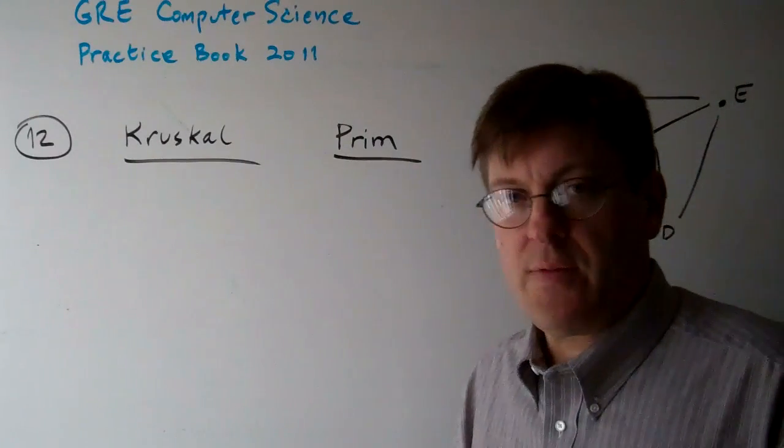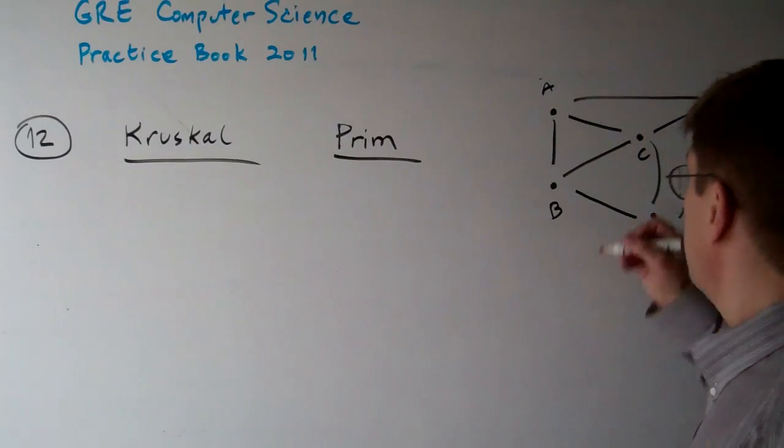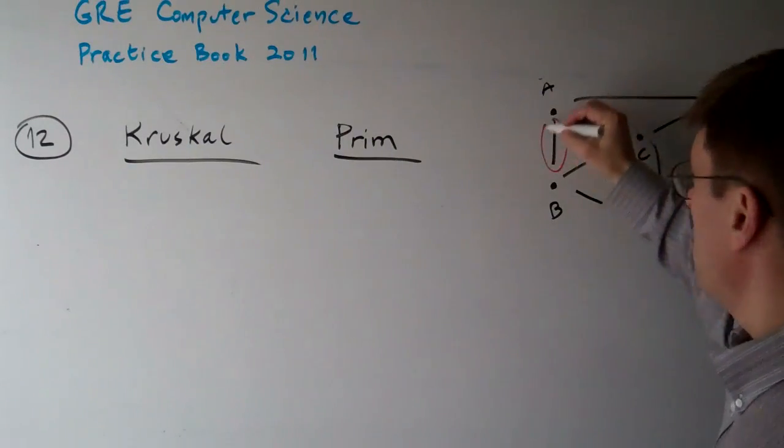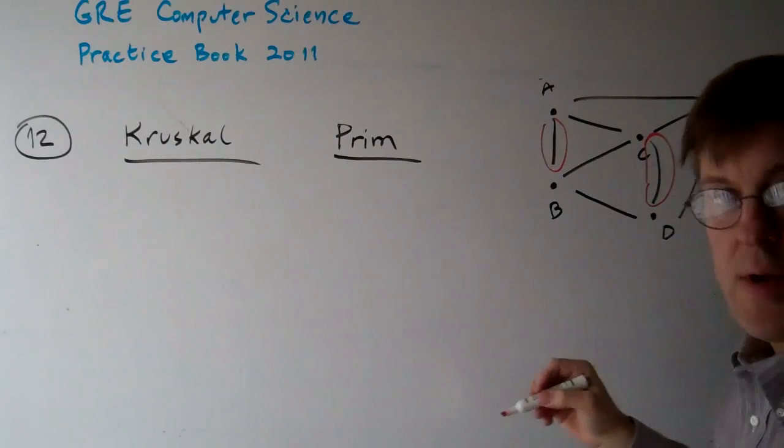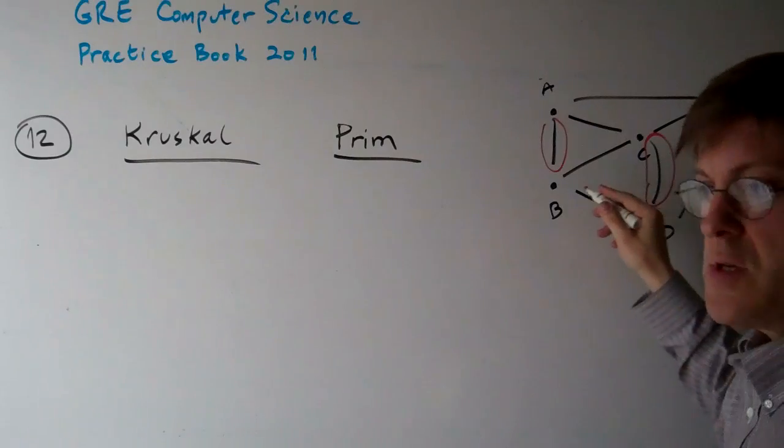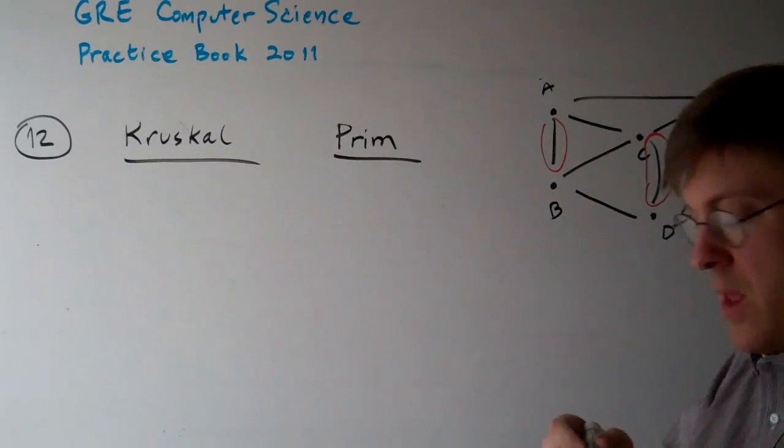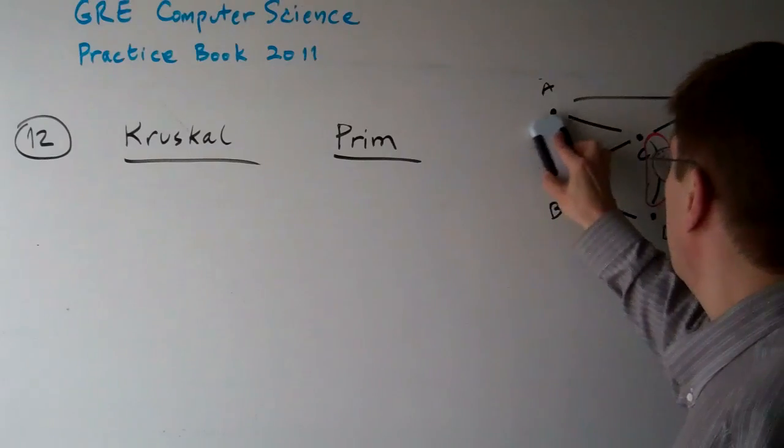But basically you just have to know the algorithms. There's really no other way. Kruskal's algorithm starts with the shortest edge and then grabs the next shortest edge that's not already in the spanning tree and continues to do that. It does this sequentially edge by edge until it comes up with the minimum spanning tree.